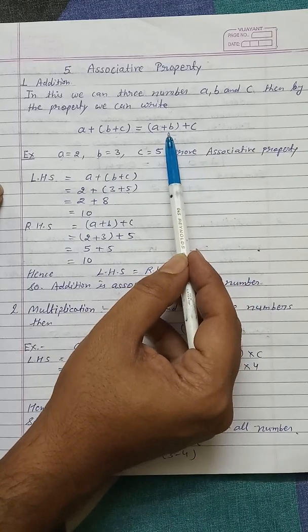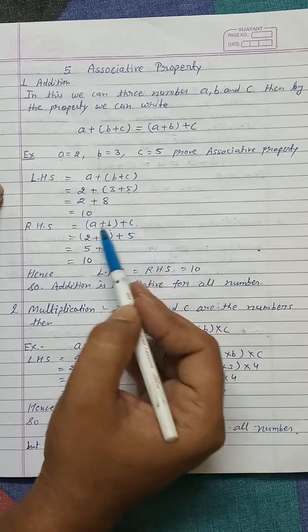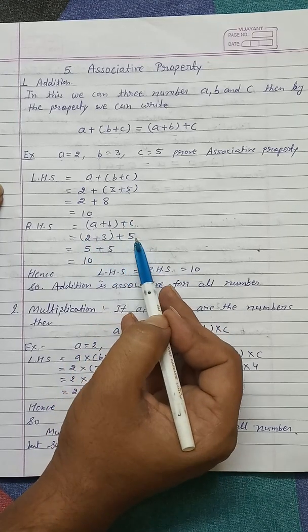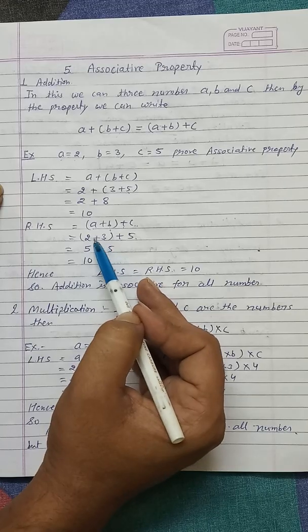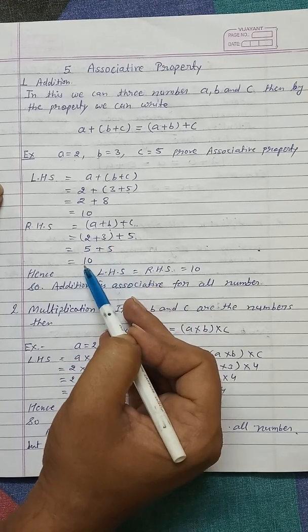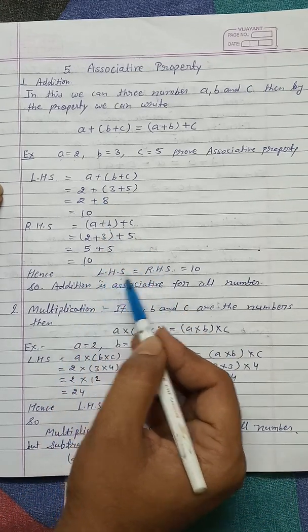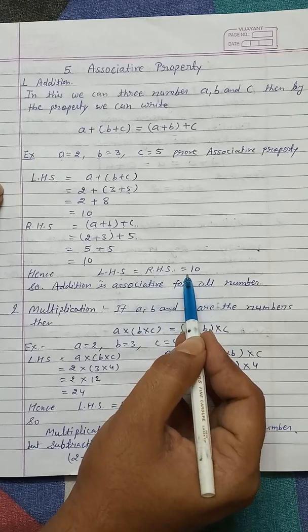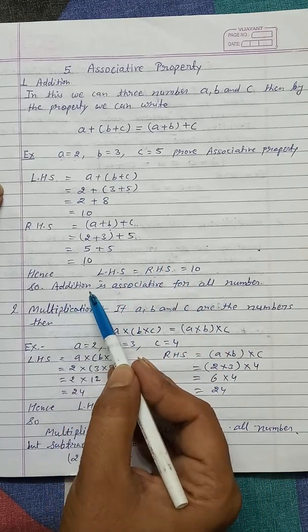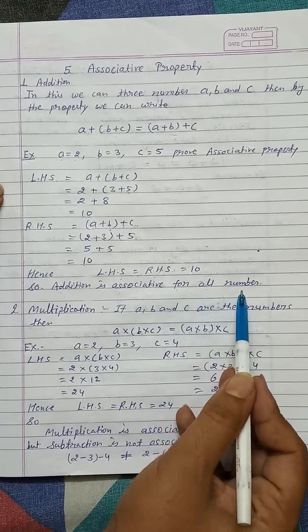Next we take the RHS: A plus B plus C. So put the value of A, B, C: 2 plus 3 plus 5. First we add these two numbers. 2 plus 3 equals 5 and 5 plus 5 equals 10. Now we can say that LHS equals RHS equals 10. Hence we can say addition is associative for all numbers.